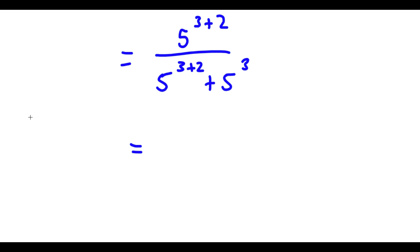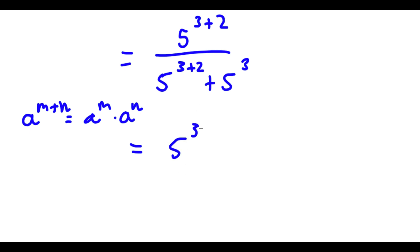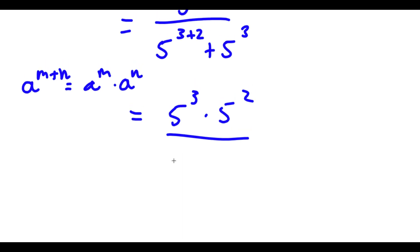Now, if I have something in the form a to the power of m plus n, this is equal to a to the power of m times a to the power of n. So 5 to the power of 3 plus 2 is going to equal 5 to the power of 3 times 5 to the power of 2. Now I have this over 5 to the power of 3 times 5 to the power of 2, plus 5 to the power of 3.